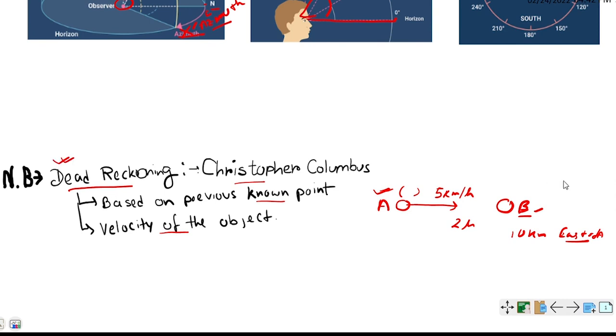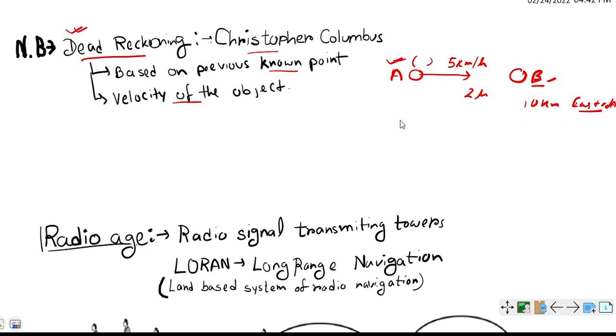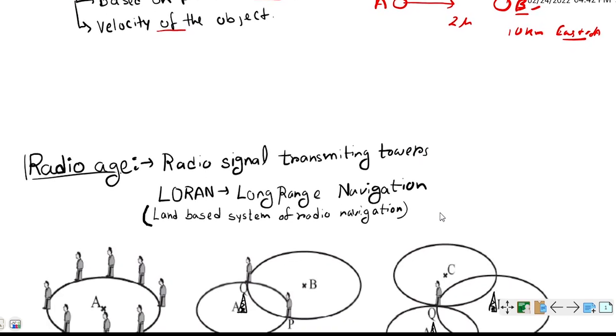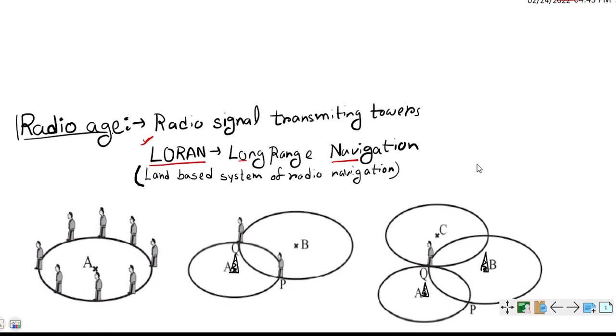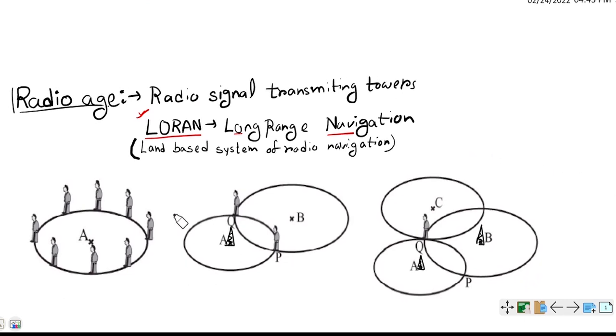Now let's move to another system, that is the Radio Age. Based on the frequency of the radio signal, we can define our position in the Radio Age. And the name given was LORAN, that is Long Range Navigation. How can we determine our position in that Radio Age? Suppose there is a tower at A which is transmitting signal and an observer is somewhere here, and he doesn't know his position.